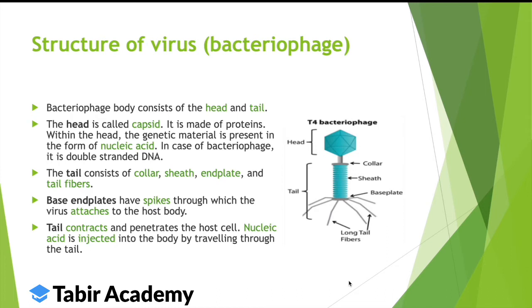The tail has three parts. First is the collar, where it connects with the head. After that is the sheath. And at the end, it has long tail fibers, almost like legs. There is also a base end plate where the tails are attached. There are spikes which are attached to the body of the host cell — like nails attaching to the host cells.